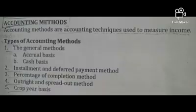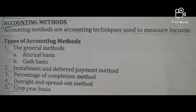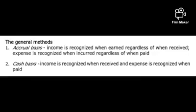We'll now proceed to accounting methods. Accounting methods are techniques used to measure income. There are five types: first, the general methods, which can either be accrual basis or cash basis; second, installment and deferred payment method; third, percentage of completion method; fourth, outright and spread out method; and fifth, the crop year basis. We will now discuss each type of accounting method, starting with the general methods: accrual basis and cash basis.